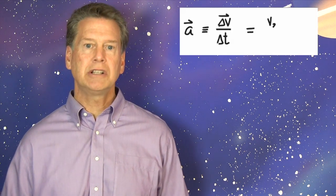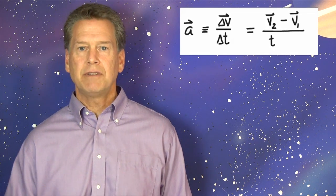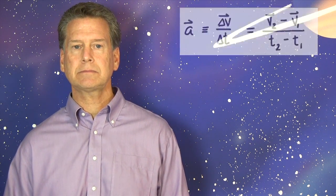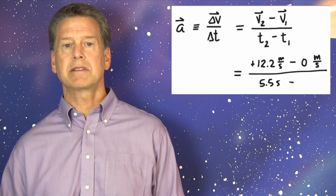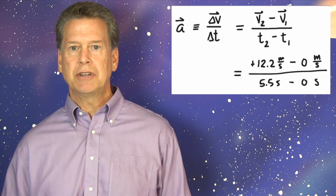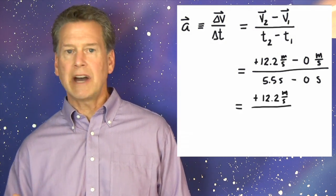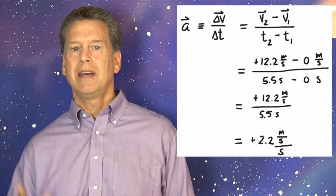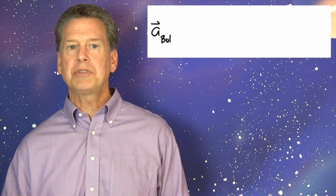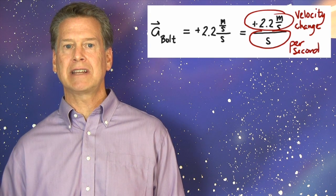Acceleration is defined as delta V vector divided by delta T. So, little a vector equals V vector sub 2 minus V vector sub 1 divided by T sub 2 minus T sub 1. That's plus 12.2 meters per second minus 0 divided by 5.5 seconds minus 0. Usain Bolt's acceleration during the first 5 or so seconds of that 100-meter dash was plus 12.2 meters per second divided by 5.5 seconds. That equals about 2.2 meters per second per second. Let each of those words mean something to you. Bolt's velocity increased by 2.2 meters per second each second during the first 5.5 seconds of his sprint.